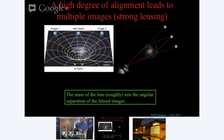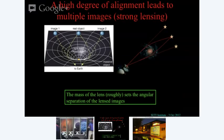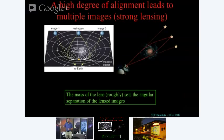It turns out there are different types of lensing, and the subfield I do most of my work in is called strong lensing. This is where the background object, the bending object, and you are almost in a perfect line. In that case, there can be more than one path around the massive object that gets focused into you, so you see more than one image of the background object — it's called multiple imaging or strong lensing.